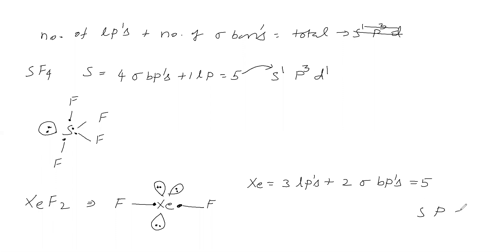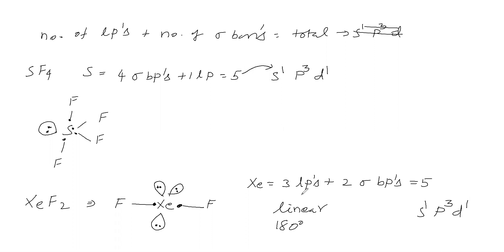So how to say hybridization? Write SPD. First give one to S, then give maximum three to P. Here five is there — one given to S, three given to P, remaining one goes to D. So hybridization is sp³d for XeF₂. There are three lone pairs and two sigma bond pairs, meaning the shape is linear and bond angle is 180 degrees.